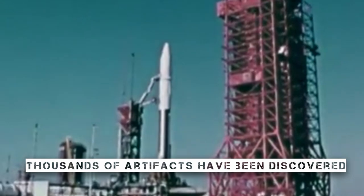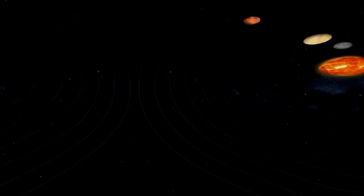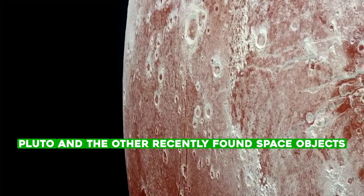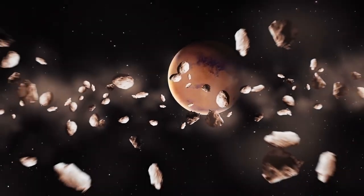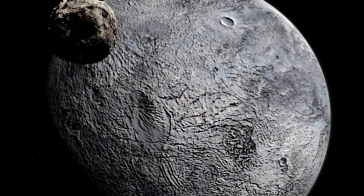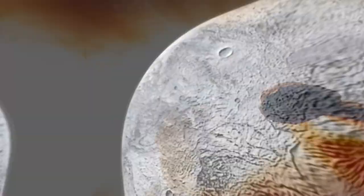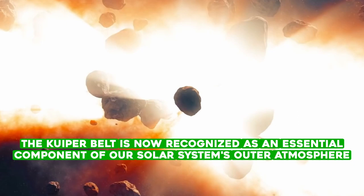Thousands of artifacts have been discovered. The finding of these additional space objects prompted the decision to categorize Pluto. Pluto and the other recently found space objects are now referred to as Kuiper Belt objects. Other Kuiper Belt objects are usually the size of Pluto's moon Charon or less. Eris, one of the Kuiper Belt objects, is nearly as massive as Pluto. The Kuiper Belt is now recognized as an essential component of our solar system's outer atmosphere.